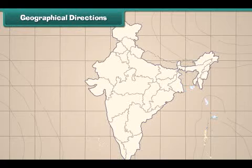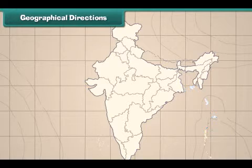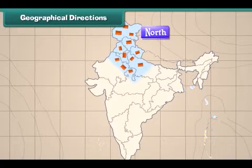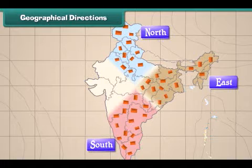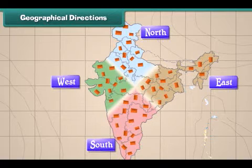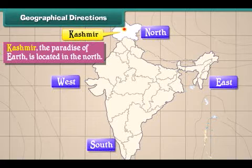Geographical directions. People live at different places in India. Some places are in the north while some others are in the south. Some places are located on the east and some others are on the west. Kashmir, the paradise of earth, is located in the north.